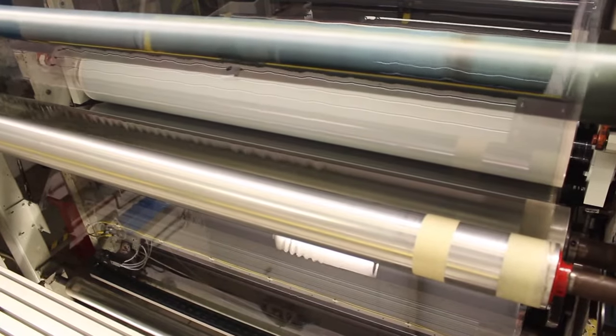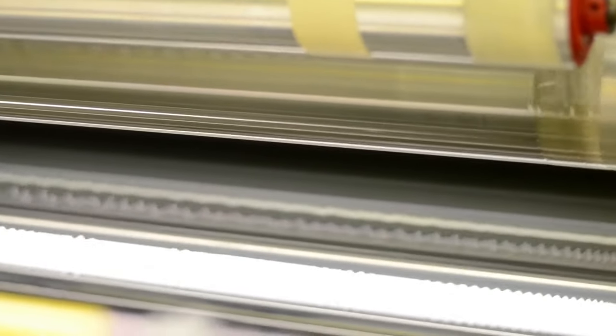Window film is comprised of thin layers of metal, polyester plastic or ceramic, specifically designed by our manufacturers to protect against the harmful effects of the sun.